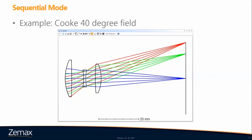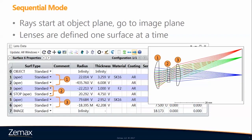Let's start with a quick review of sequential mode, showing a classic triplet design. In sequential mode, rays start at the object plane and propagate sequentially, surface by surface, to the image plane. In the lens data editor, surface 0 is the object and surface 7 is the image. The lenses are defined one surface at a time, so lens 1 is defined by two surfaces. The rays start at infinity from the object surface, coming in collimated or parallel, then propagate sequentially down to the image plane.